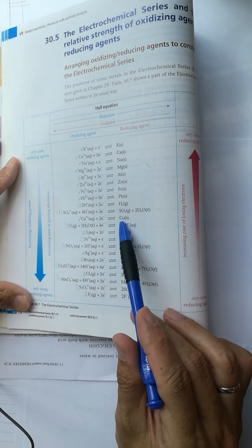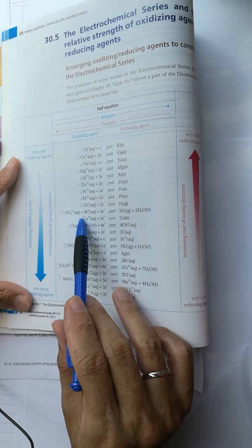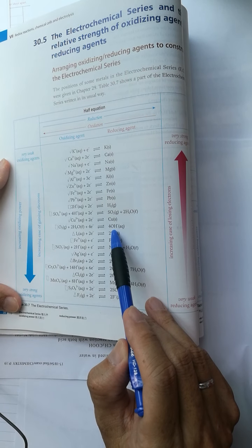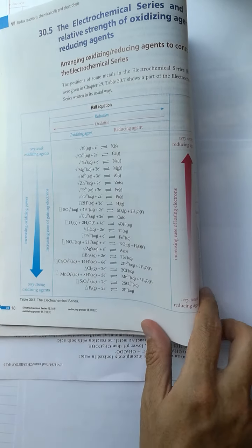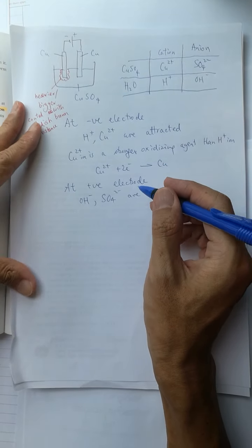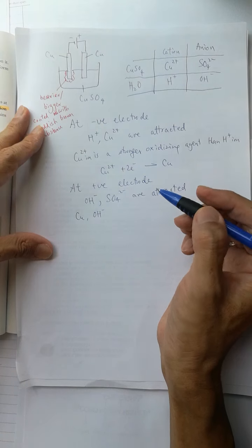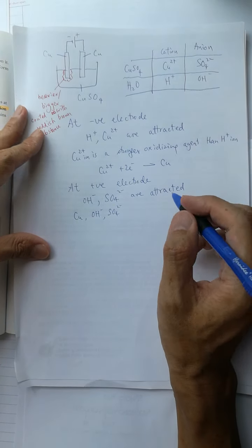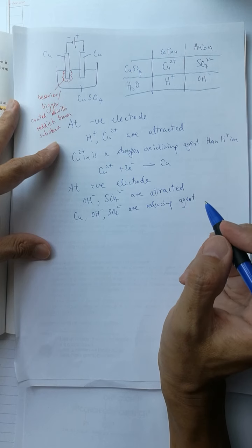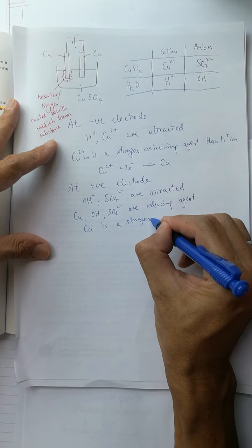But now we use copper electrodes. Copper can also lose electrons, and copper is a stronger reducing agent than the hydroxide ion. As a result, there are three substances that want to lose electrons: copper, hydroxide ions, and sulfate ions — they are all reducing agents — and copper is the strongest reducing agent among them.